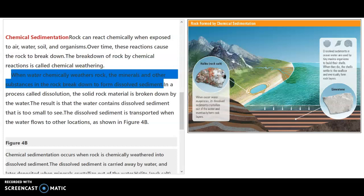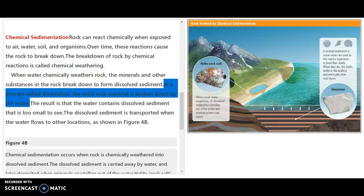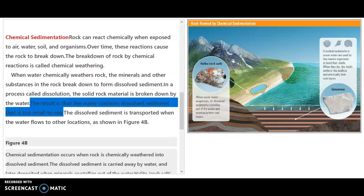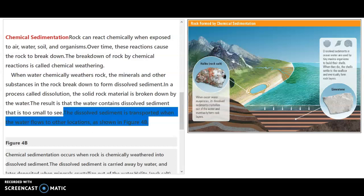When water chemically weathers rock, the minerals and other substances in the rock break down to form dissolved sediment. In a process called dissolution, the solid rock material is broken down by the water. The result is that the water contains dissolved sediment that is too small to see. The dissolved sediment is transported when the water flows to other locations as shown in figure 4b.